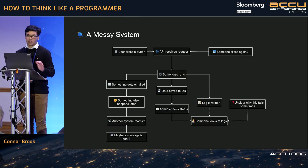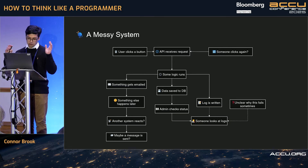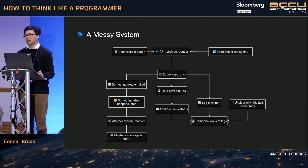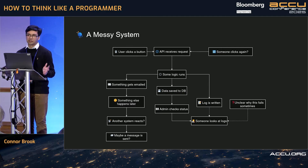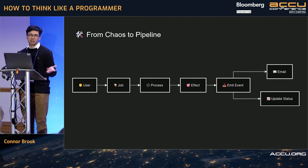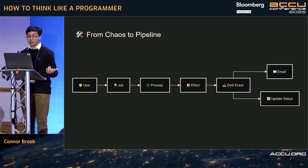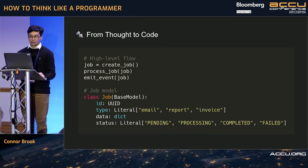Let's say you have a problem where you need to model different events or jobs or things that happen. It's all in your head, a bit confusing. You have this mental model — a half-baked idea of the problem — which is more like a pre-model. There are no names yet, just things happening. So you decide: pipeline. We need a pipeline. We have users that trigger jobs, which have things that happen, processes, an effect that occurs, and then some kind of event happens.